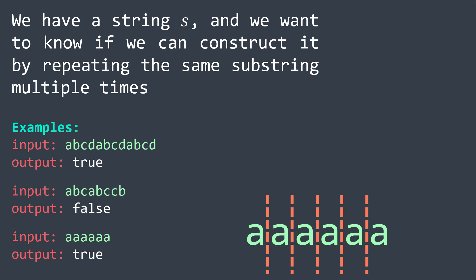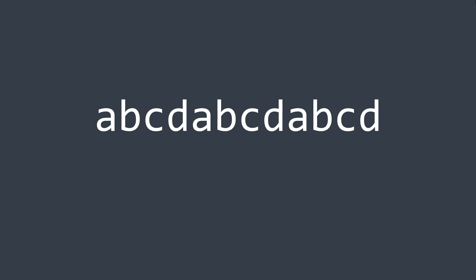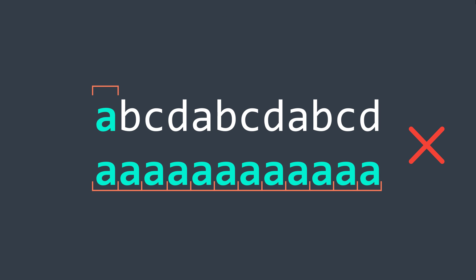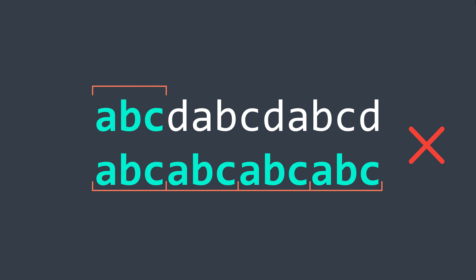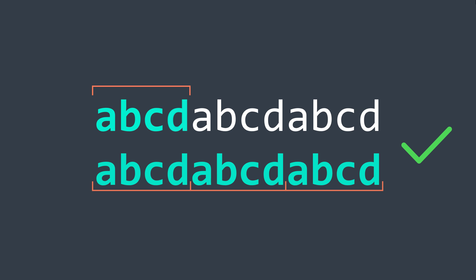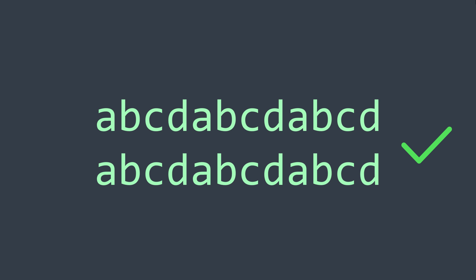The first solution is the brute force solution — we just try to multiply each prefix and see if it matches s. For example, we repeat the prefix of size one: it doesn't match. The prefix of size 2 (AB): doesn't match. The prefix of size 3 (ABC): doesn't match. The prefix of size 4 (ABCD): it matches, so we return true.